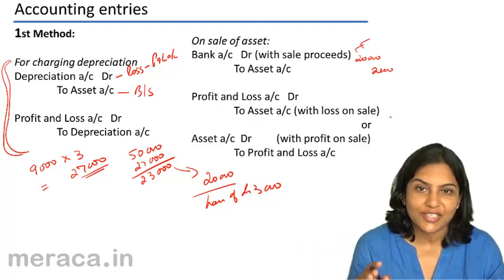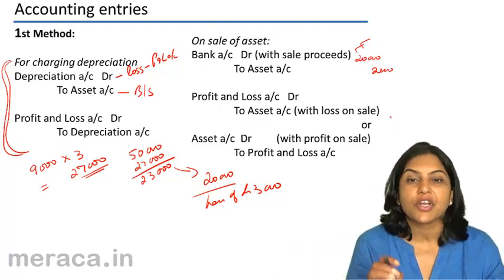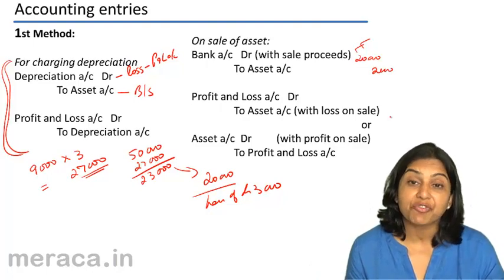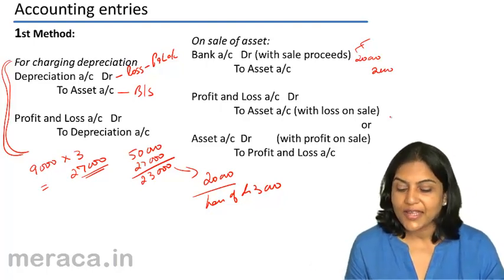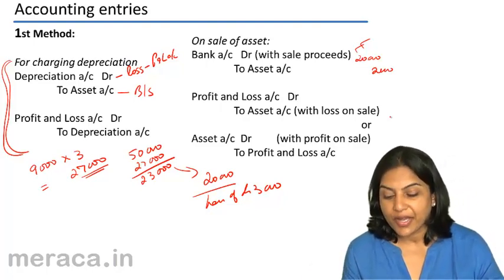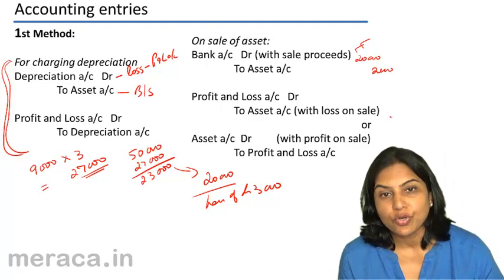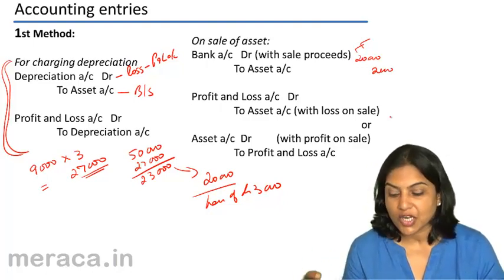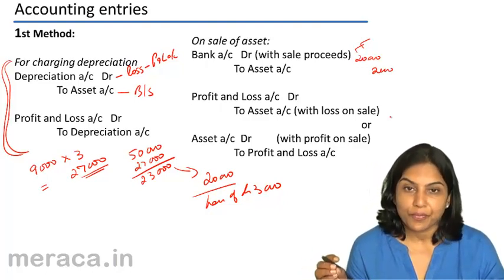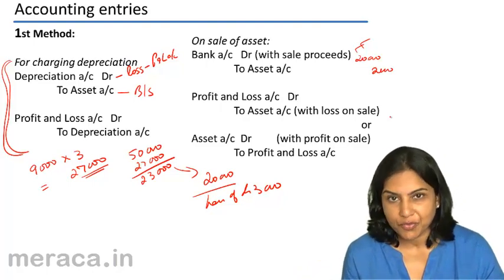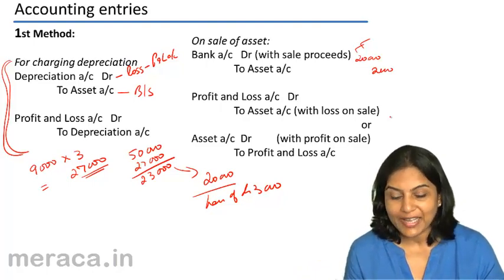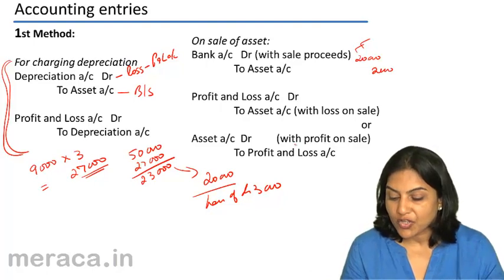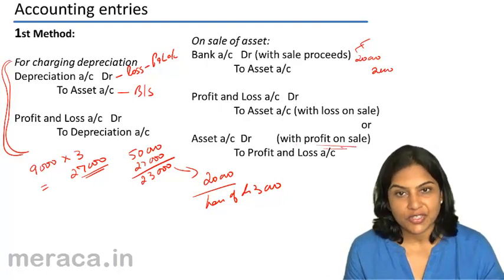When profit and loss account is debited, we are talking of a loss. However, if there is a profit, the entry would be asset account debit to profit and loss account. When profit and loss account is credited, we are talking of a profit — an income. Asset account debit to profit and loss if there is a profit on sale.